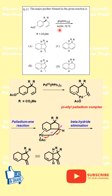Palladium, PPH3, acetic acid, and heat — this is pi-allyl palladium chemistry, not a random rearrangement. We start with an allylic acetate embedded in a bicyclic system where R is a CO2Me. Reaction conditions are palladium(0), acetic acid, and 75 degrees Celsius.